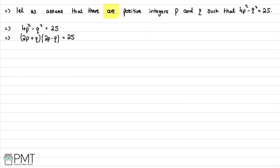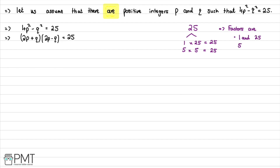We need to think about what to do next. Since this product equals 25, we can look at the integer factor pairs of 25. We have 1 × 25 = 25, and 5 × 5 = 25. So the factor pairs of 25 are 1 and 25, and 5 and 5.